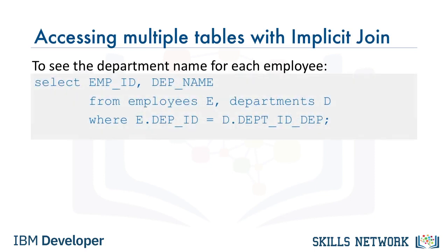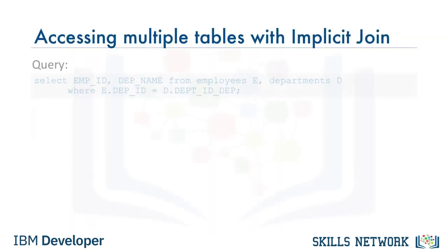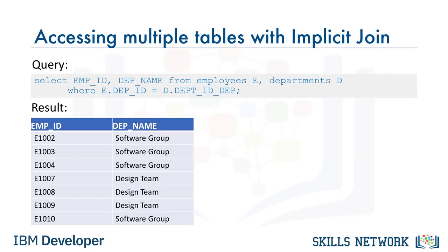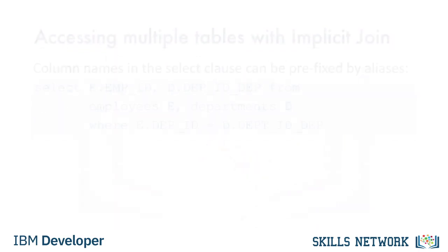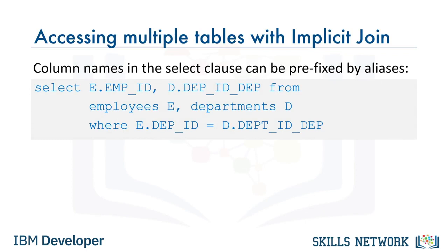If we wanted to see the department name for each employee, we would enter the code as follows: SELECT employee_ID, department_name FROM employees E, departments D WHERE E.department_ID = D.department_ID. Similarly, the column names in the SELECT clause can also be prefixed by aliases as shown in the query: SELECT E.employee_ID, D.department_ID FROM employees E, departments D WHERE E.department_ID = D.department_ID.